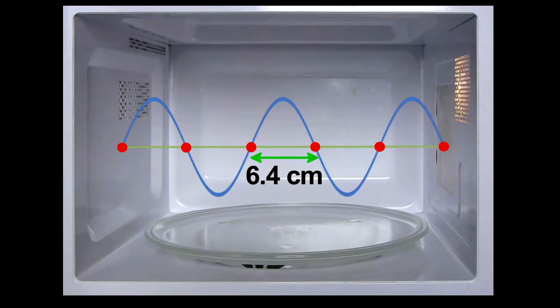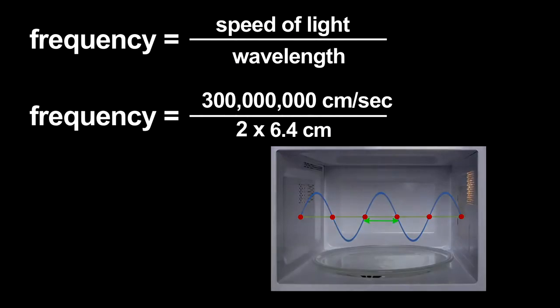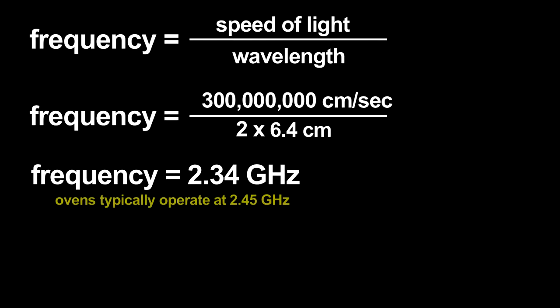Using that wavelength, I can estimate the microwave radiation's frequency. The frequency is related to the wavelength by the speed of light. I get an answer that only has a 4 or 5 percent error. Not bad for this primitive measurement.